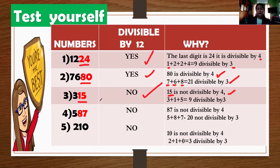Another one, we have 87. 87 is not divisible by 4, and when we add the digits, it's not divisible by 3 either. The answer is no. Last number is 210. Is 10 divisible by 4? No, it is not. But when we add the digits, it is divisible by 3. So it is no — it's not divisible by 12.